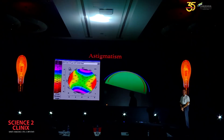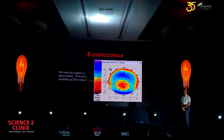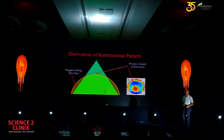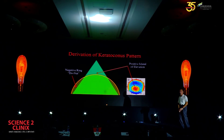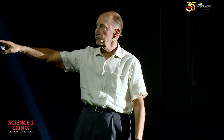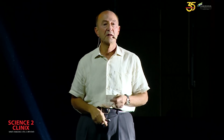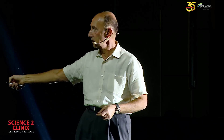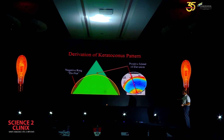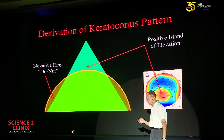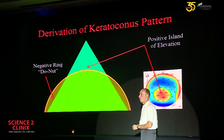Why do we get a positive island of elevation on an ectatic cornea? Comparing a cone to a best fit sphere, the sphere truncates the top of the cone — that corresponds to the positive area, the positive island of elevation. Below the zero point is a thin band of green going to blue (negative). The deepest negative is in the mid-periphery, not the far periphery. That is the derivation of the positive island of elevation — what we look for when screening patients.